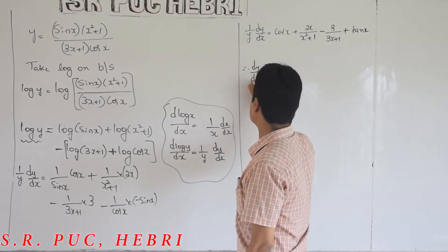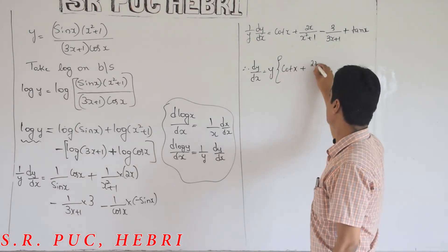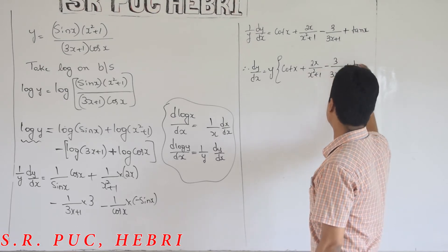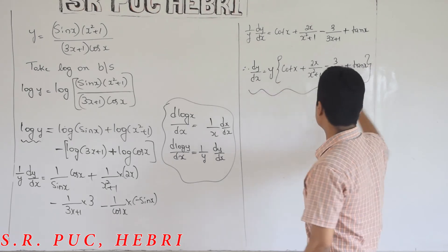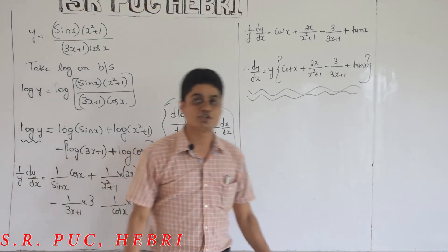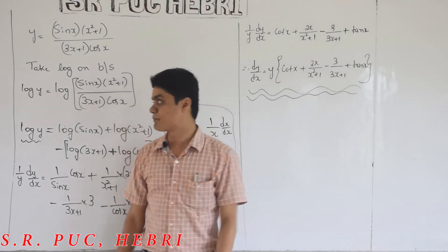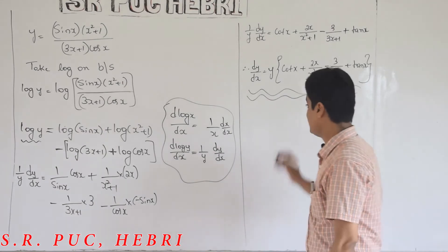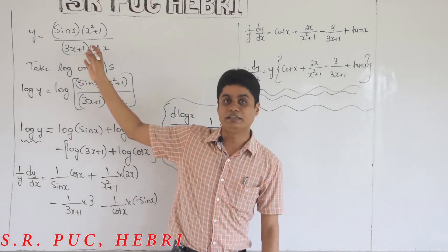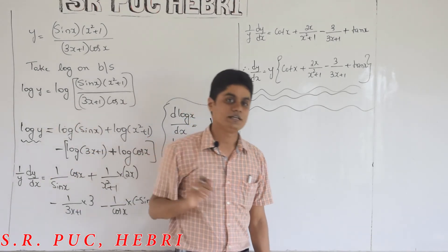Therefore dy/dx = y·[cot x + 2x/(x²+1) − 3/(3x+1) + tan x]. This is the answer to the given expression. I did this differentiation without using quotient rule or product rule anywhere. So the main purpose of logarithmic differentiation is to avoid the quotient rule and product rule.